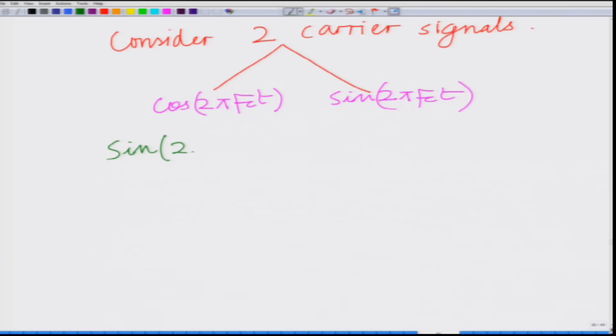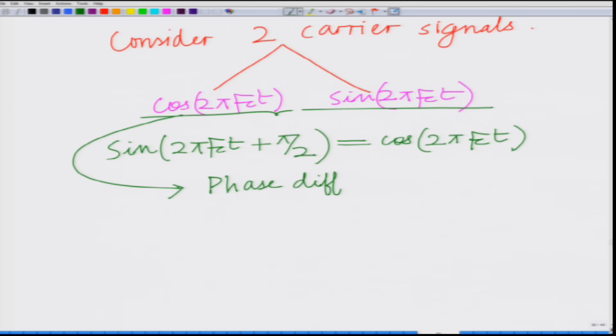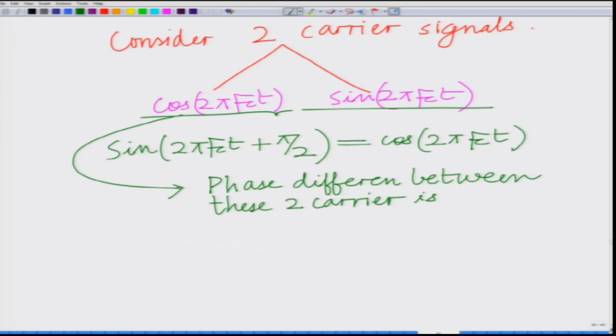Observe that the phase difference between these two carriers is 90 degrees. That is, sine(2π·fc·t + π/2) equals cosine(2π·fc·t). Therefore, the phase difference between these two carriers is 90 degrees or π/2 radians. Hence these carriers are termed to be in quadrature — quadrature basically denotes 90 degrees or a phase of π/2.